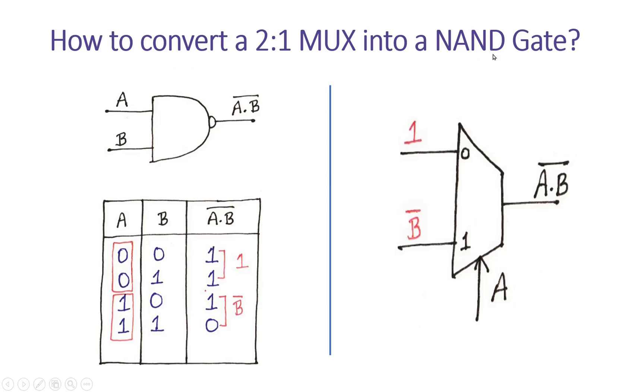This is the symbol of a 2:1 multiplexer. I will apply one of the inputs to the select line of the multiplexer. I am applying A at the select line.